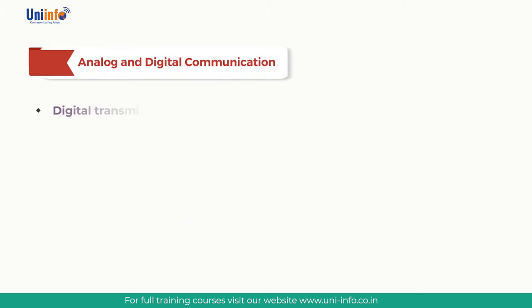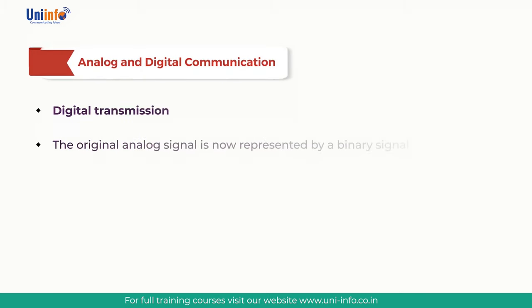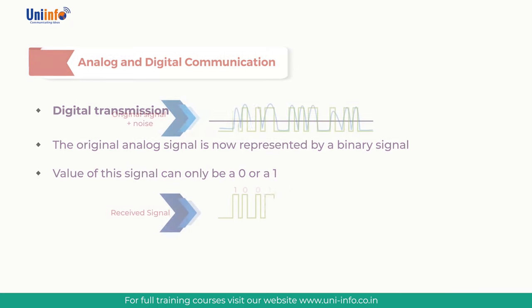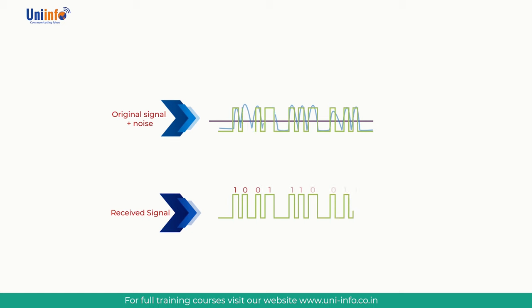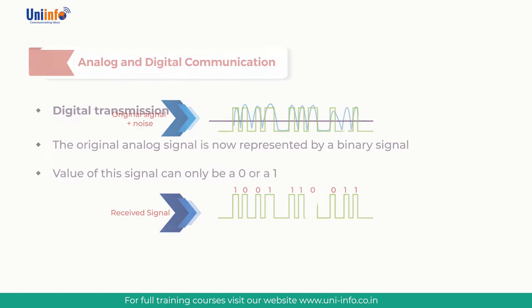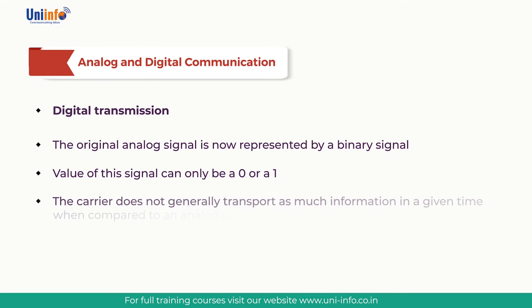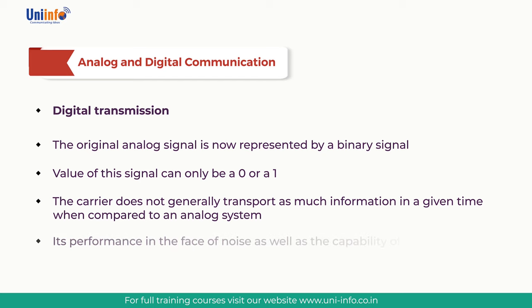Any interference to an analog signal results in distortion of the original signal, which is particularly difficult to remove. With digital transmission, the original analog signal is represented by a binary signal. Since the value of this signal can only be a 0 or a 1, it is much less susceptible to noise interference. When digital transmission is used, the carrier does not transport as much information in a given time compared to an analog system, but this disadvantage is far outweighed by its performance in the face of noise as well as the capability of compressing the data.